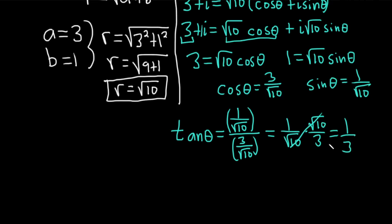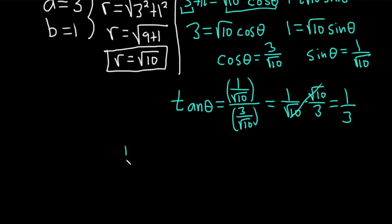So we have that the tangent of theta, the tangent of theta is equal to 1 over 3. That's going to be the tangent of theta. So that would imply that theta is equal to the arctangent of 1 over 3.